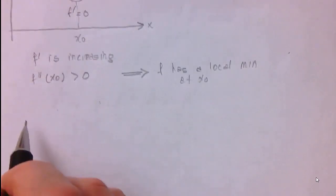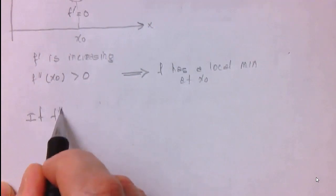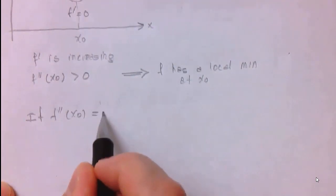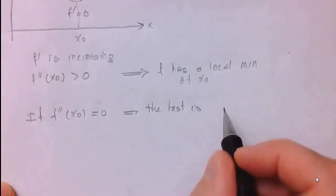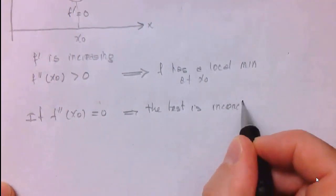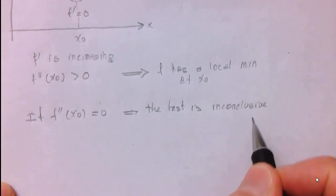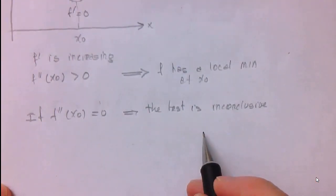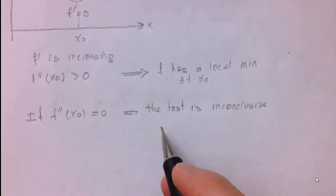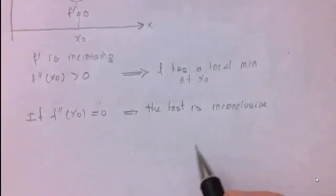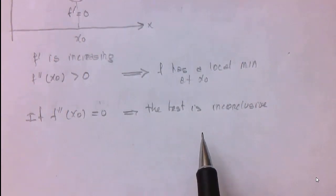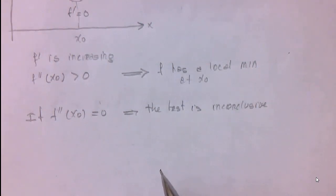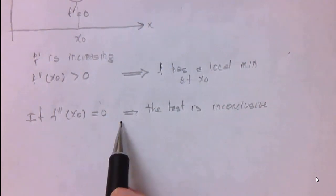The tricky part is that if the second derivative at x₀ is 0, then the test is inconclusive. We would have to go back to the first derivative test to find out if there is a maximum, a minimum, or nothing. The second derivative test may fail, may be inconclusive, but the first derivative test isn't.